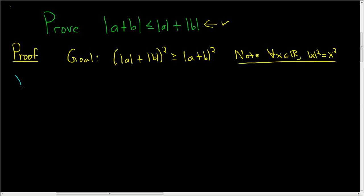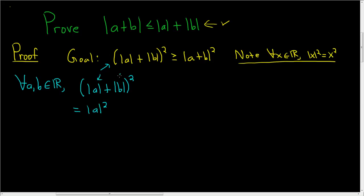So for all real numbers A and B, we start by looking at the absolute value of A plus the absolute value of B, the whole quantity squared. Using the formula to expand this: you square the first term, double the product of the two terms — so plus 2 times the absolute value of A times the absolute value of B — and then add the absolute value of B squared.